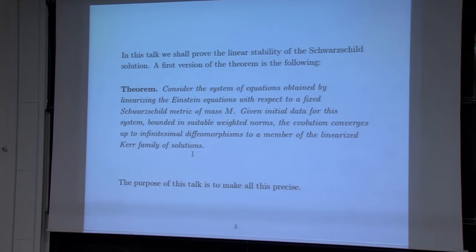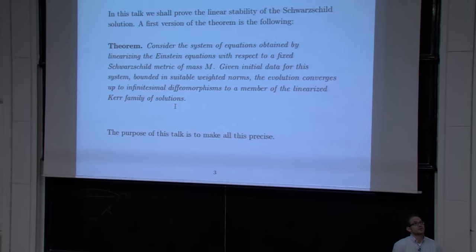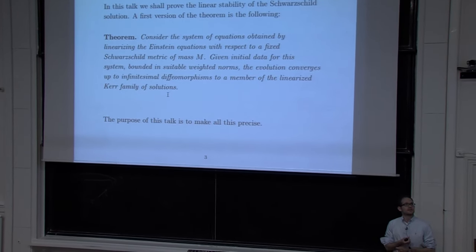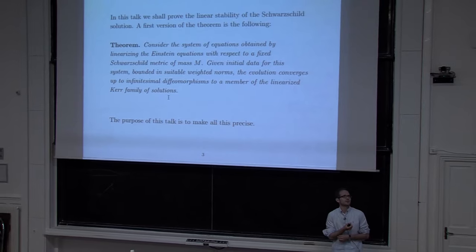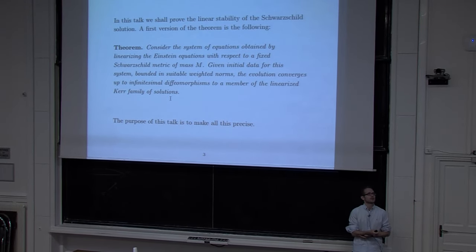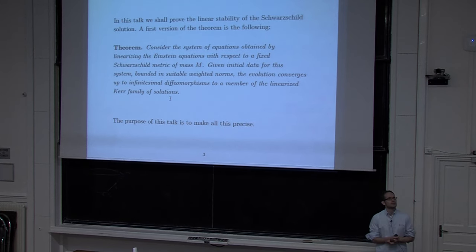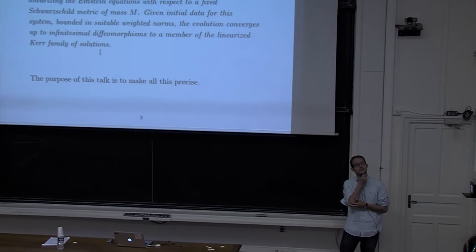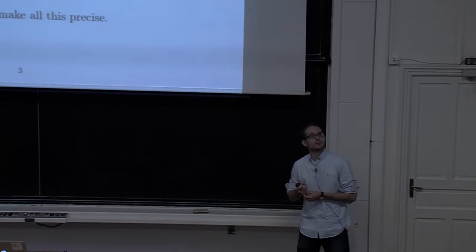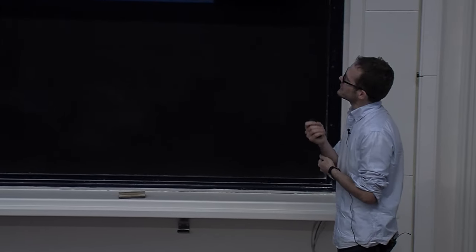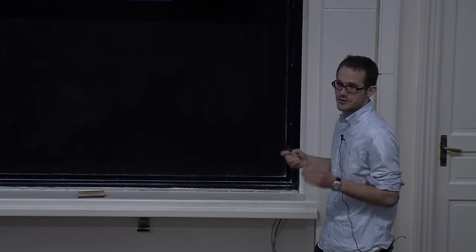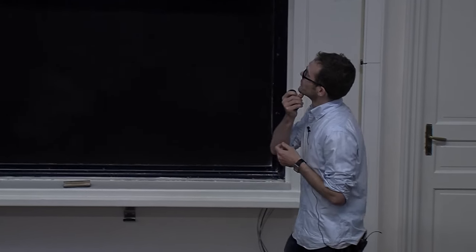Let me give you a first version of the statement. You consider the system of equations obtained by linearizing the Einstein equations with respect to a fixed Schwarzschild metric of mass m — this is the system of gravitational perturbations. You prescribe initial data for the system, impose suitable bounds on it, and then the evolution converges, up to infinitesimal diffeomorphisms, to a member of the linearized Kerr family of solutions.